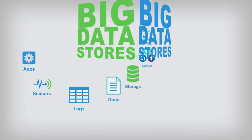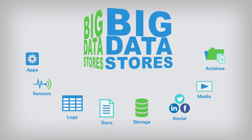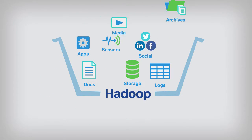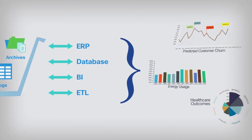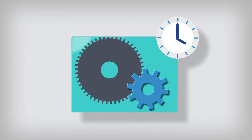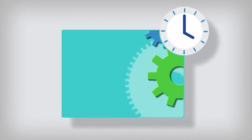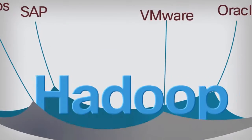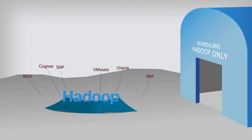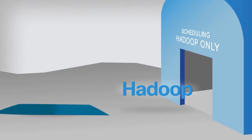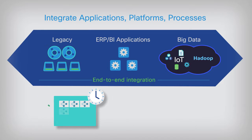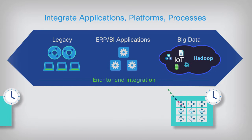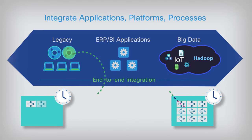Whatever big data sources you use in your enterprise, it probably lands on Hadoop and then needs to be integrated with other enterprise data before you can analyze it. Automating this integration can be extremely complicated by numerous dependencies and by native Hadoop schedulers that are restricted to Hadoop jobs. Cisco Workload Automation's end-to-end architecture easily integrates Hadoop jobs into your core scheduling operations.